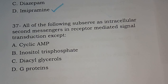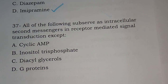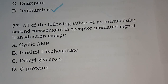Question 37: All of the following are observed as intracellular second messengers in receptor-mediated signal transduction, except. Options: cyclic AMP, inositol triphosphate (IP3), diacylglycerol (DAG), G protein. The correct answer is G protein. G protein is not a second messenger; it's a receptor.